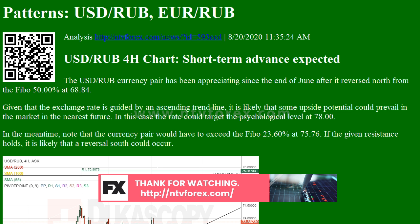EUR/RUB 4H chart — two scenarios likely. The EUR/RUB exchange rate has been trading upwards since the end of June after it retested the 77.00 level. It is likely that some upside potential could prevail in the market as the currency pair could gain support from the 55, 100, and 200-hour SMAs in the 82.30–86.80 area.